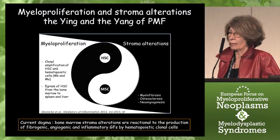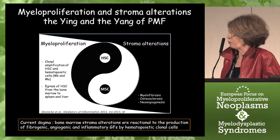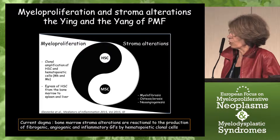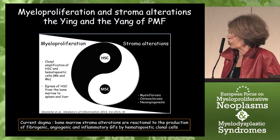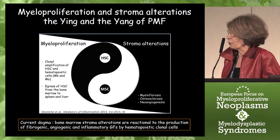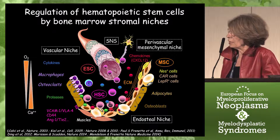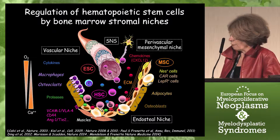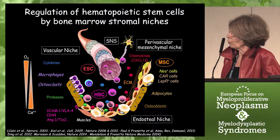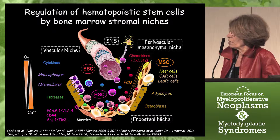The stromal alteration is characterized by huge myelofibrosis, osteosclerosis, and neoangiogenesis. Up to now, the current dogma was that the stromal alteration was reactional to the production by the hematopoietic clone of several growth factors acting as fibrogenic, angiogenic, and inflammatory mediators. However, this was without understanding that stromal cells are very important for the regulation of hematopoietic stem cells, as demonstrated by the recent concept of the stromal niche.